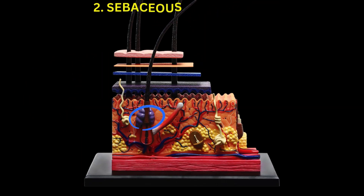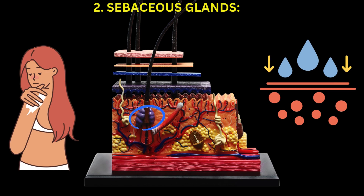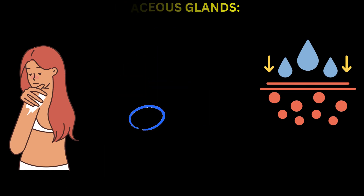2. Sebaceous glands: associated with hair follicles, secrete sebum — an oily substance that helps moisturize the skin and hair, preventing them from drying out. Sebum also has antimicrobial properties, helping to protect the skin from infections.